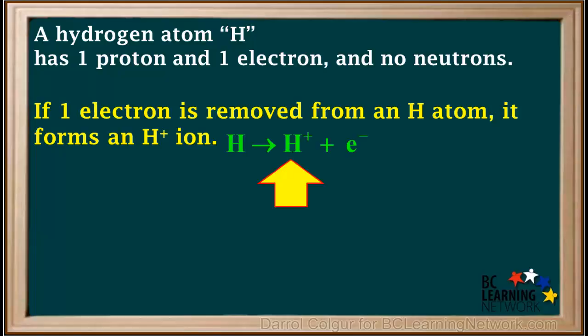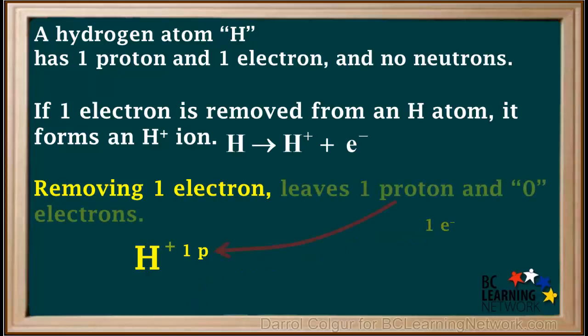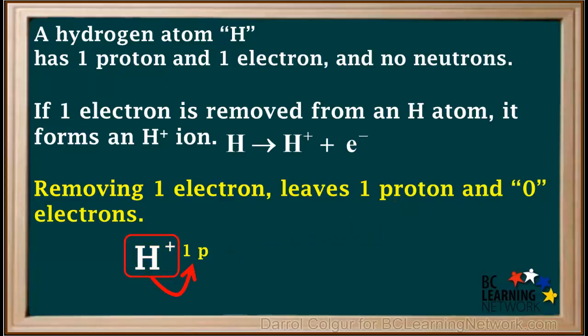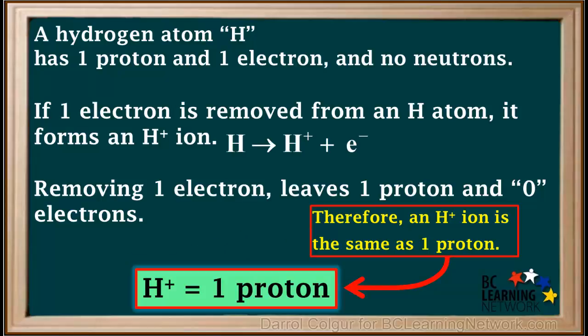A neutral H atom has one proton and one electron. Removing an electron will leave a charge of positive one, one proton, and zero electrons. So an H+ ion contains no electrons, no neutrons, and one proton. Therefore an H+ ion is the same thing as one proton, and we use the terms H+ ion and proton interchangeably in Chemistry 12.